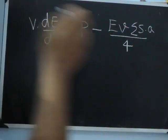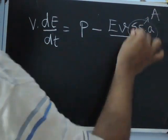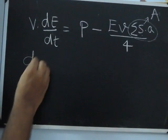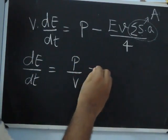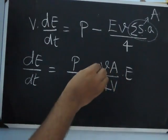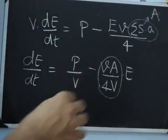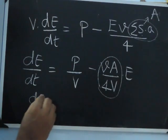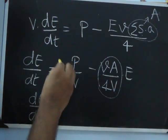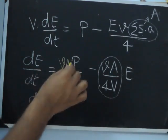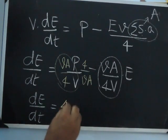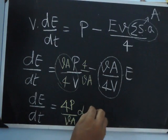So I can divide this equation by V. I will also call the summation of all areas times their absorption coefficients as A — not area, but that total quantity. Dividing by V, I have DE by DT equal to P by V minus cA by 4V into E. Here c is the velocity of sound and V is the volume of the room. Let's call this quantity cA by 4V as alpha for convenience. So I have DE by DT equal to 4P by VA times alpha minus E times alpha.